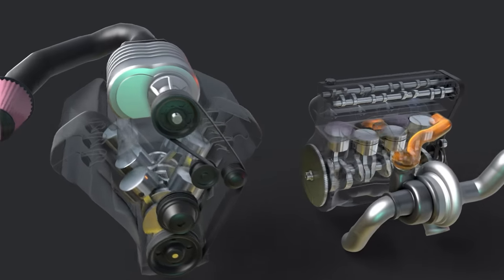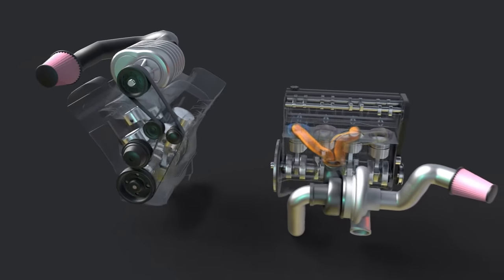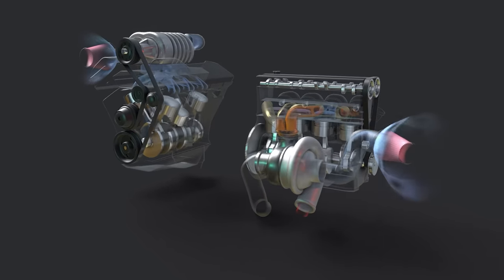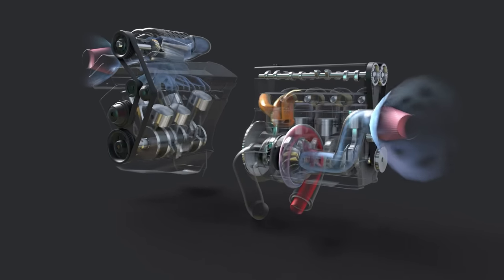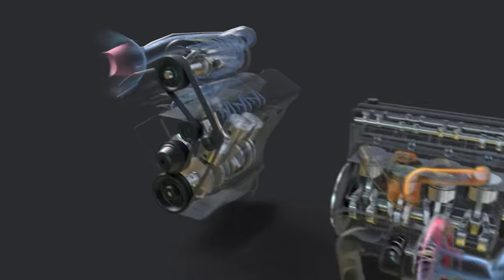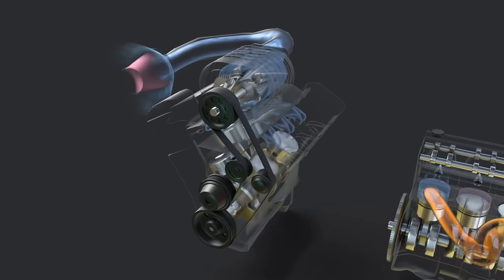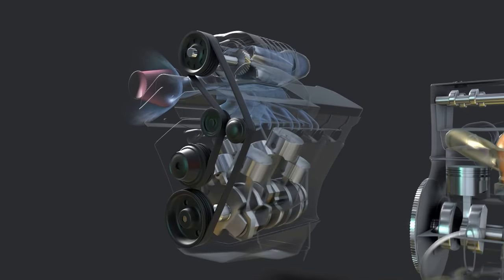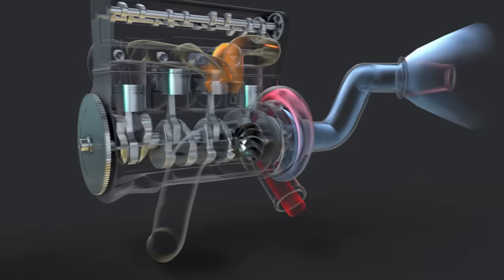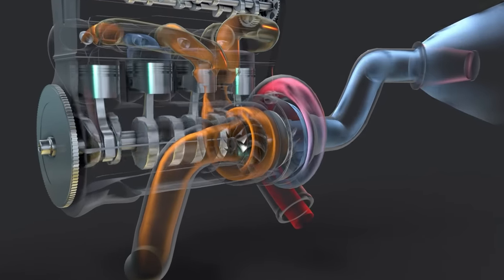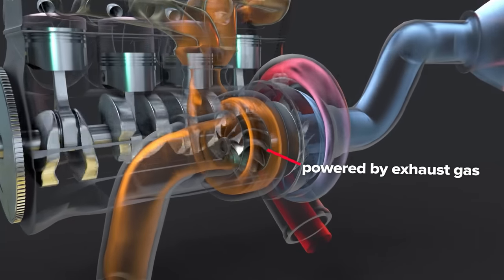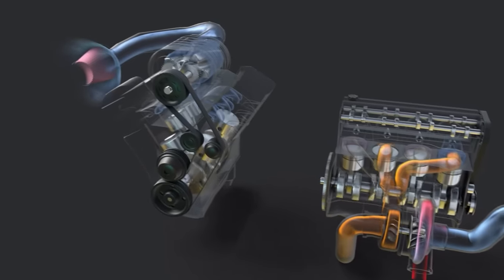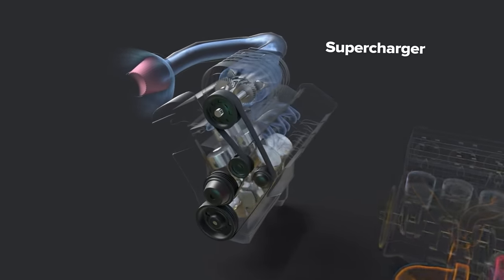The basic function of both superchargers and turbos is to deliver more air to an engine's internal combustion process. The main distinction between the two is this: superchargers are mechanically powered, often by connection to the engine crankshaft, while turbos are powered by engine exhaust gas. Let's look at how each unit works, starting with a supercharger.